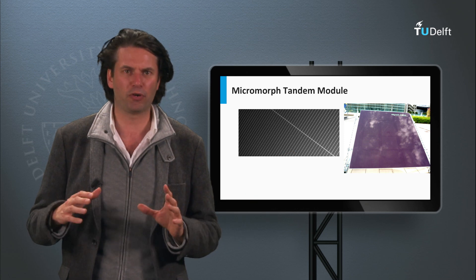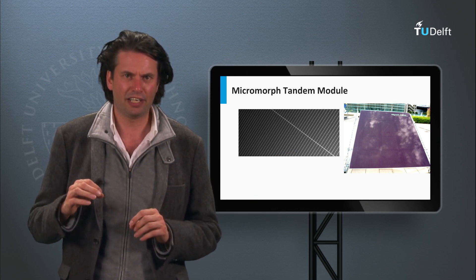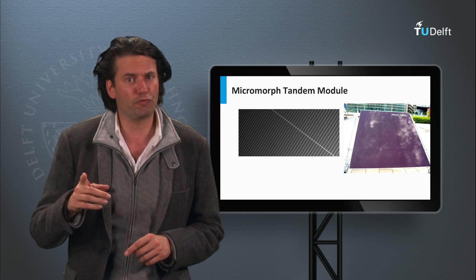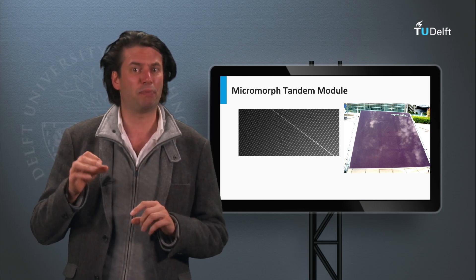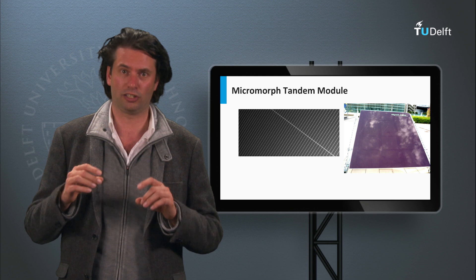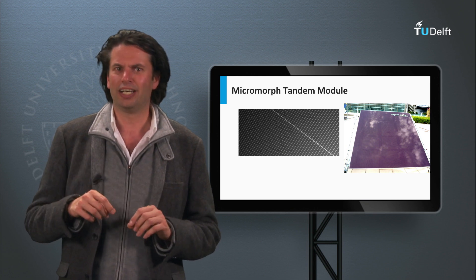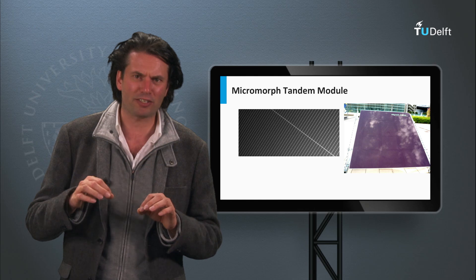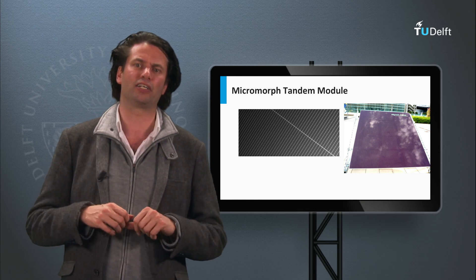Here you see a picture of a micromorph tandem module. You can see the various solar cells and the laser scribes. The open circuit voltage of the module is determined by the number of solar cell strips that are connected in series. Note that shading effects on this type of module is different from that of wafer based crystalline silicon solar cells.